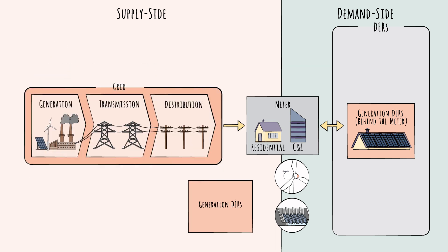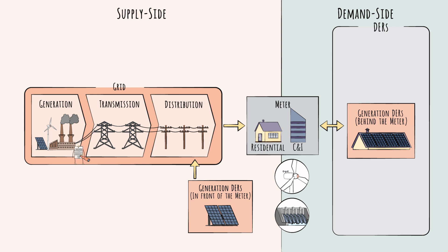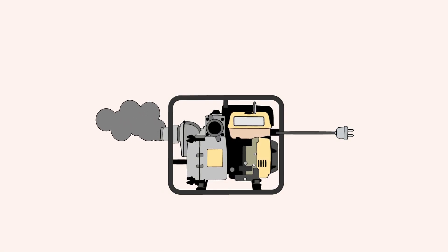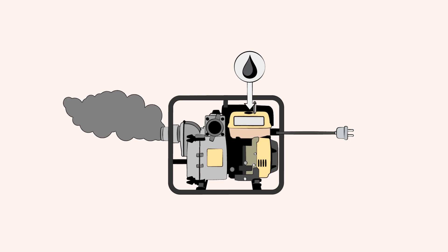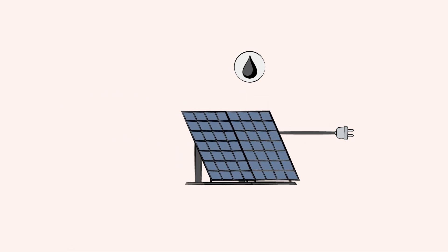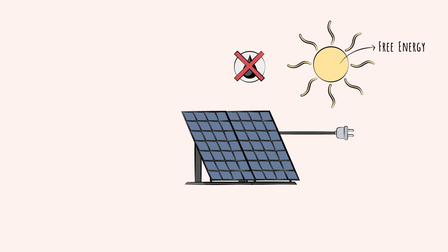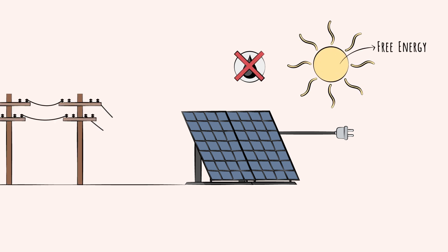Generation DERs can also be in front of the meter, meaning they connect to the low-voltage distribution grid. For example, a small community might install a small solar farm. In this case, the utility will be able to monitor and often control these resources. Distributed energy generation is not actually new – we've been using fuel generators to produce on-site electricity for a century. But renewables are different in a key way: they involve zero marginal costs, meaning that producing a surplus and sending it back onto the grid for others to use is a real possibility.